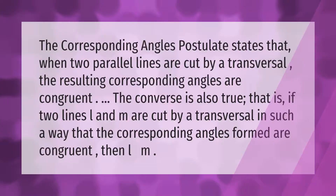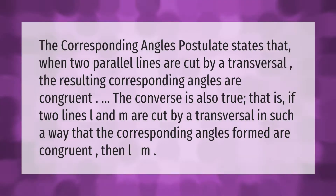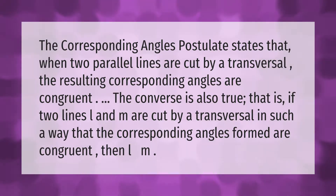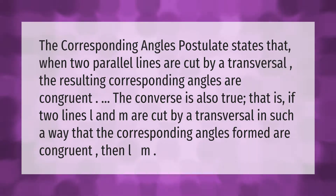The corresponding angles postulate states that when two parallel lines are cut by a transversal, the resulting corresponding angles are congruent. The converse is also true: if two lines l and m are cut by a transversal such that the corresponding angles formed are congruent, then l is parallel to m.